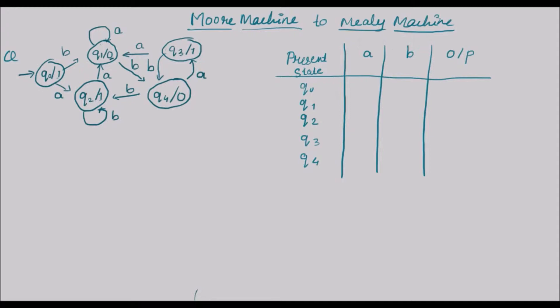Q3 is having output 1 and q4 has an output of 0. So writing all outputs: q0 is 1, q1 is 0, q2 is 1, q3 is 1, and q4 has an output of 0.